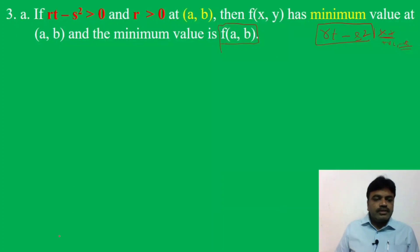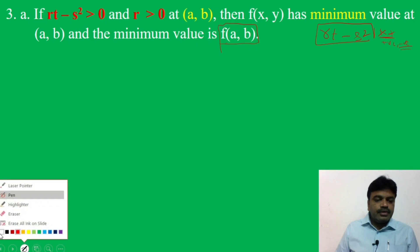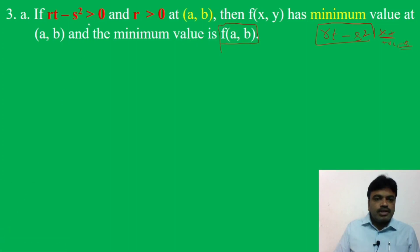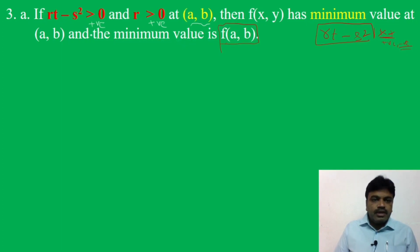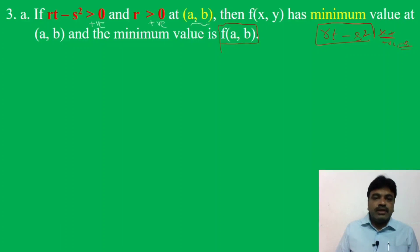If rt minus s square is greater than 0 and r is also greater than 0, we get minimum value. If rt minus s square is greater than 0 and r is negative at (a,b), then f(x,y) has maximum value at (a,b), and the maximum value is f(a,b). We simply substitute the point into the given function.